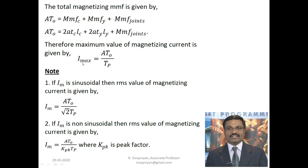AT0/TP gives the maximum (peak) value of the magnetizing current. However, in electrical engineering we always use RMS values. If we assume a sinusoidal waveform, we divide the maximum value by root 2, giving IM = AT0 / (√2 · TP). If the waveform is non-sinusoidal, we divide by the peak factor KPK instead of root 2. The value of KPK can be obtained from the problem statement.